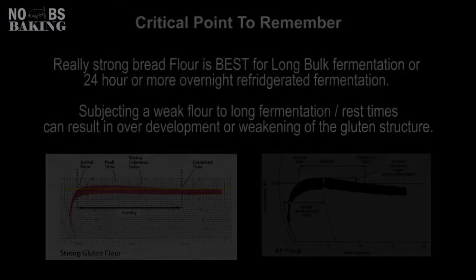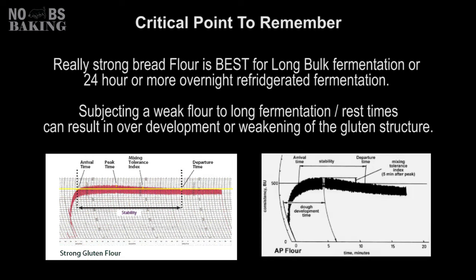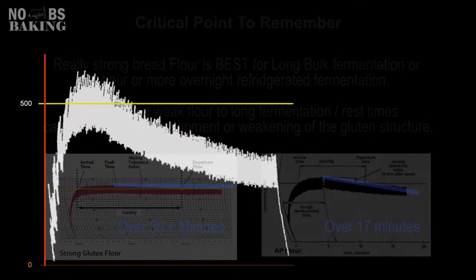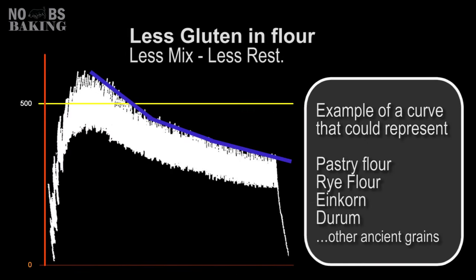A quick note: you can see a perfect example by looking at these curves of why long fermentation and rest times can work with some flours and not so well with others. A long, stable, and gradual drop from the 500 line shows that a flour will stand up well to extended enzymatic and bacterial conditioning, while the curve on the right shows a more downward and rapid plunge that translates into much faster degradation of the gluten structure. The less gluten in your flour or dough, the faster and steeper the decline — as demonstrated with a curve that could represent a pastry flour or even a high-protein but low-gluten flour such as rye or ancient grains.